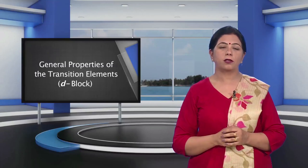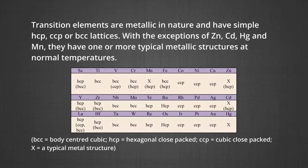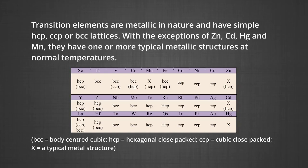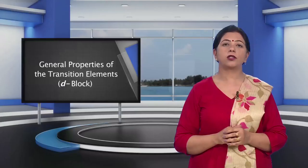The physical properties: nearly all the transition elements are metallic in nature and have simple HCP, CCP or BCC lattices. With the exceptions of zinc, cadmium, mercury and manganese, they have one or more typical metallic structures at normal temperatures. The table shows the lattice structures of the transition metals. BCC stands for body-centered cubic, HCP stands for hexagonal close packed, and CCP stands for cubic close packed.